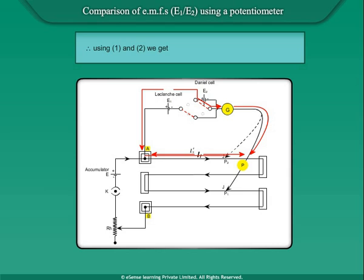Therefore, using (1) and (2), we get (E1 + E2)/(E1 - E2) = L1 dash/L2 dash. Therefore, E1/E2 = (L1 dash + L2 dash)/(L1 dash - L2 dash).